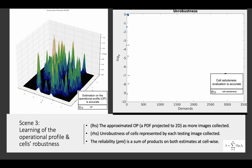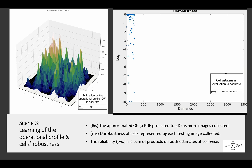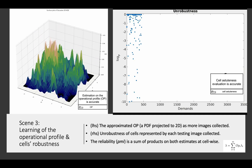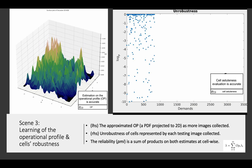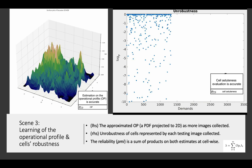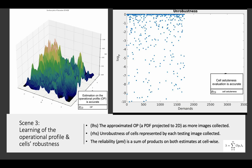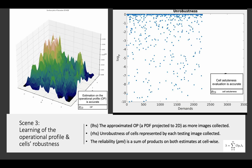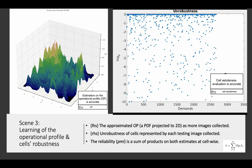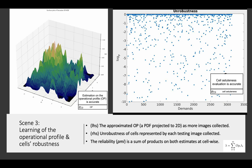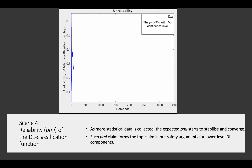The animation on the left shows the approximated operational profile projected into a 2D space, as more and more operational data — i.e., images of the objects — is collected from statistical testing. On the right-hand side, the robustness evaluation evidence of the small cells is shown as a scatter plot. The reliability metric PMI is then the sum of products of both types of estimates at the cell-wise level. This plot shows the reliability claims stated in PMI, and we may observe the result starts to stabilize and converge as more statistical data is collected. Such a PMI claim forms the top claim in our safety arguments for lower-level deep learning components.